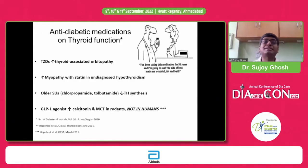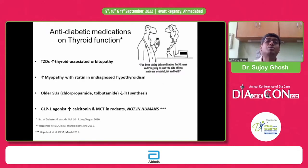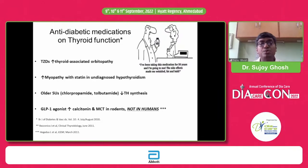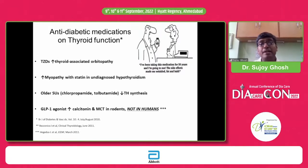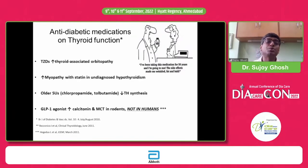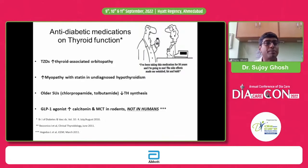Regarding the medications we use in diabetes and their effect on thyroid function: if you are using a glitazone in a patient with Graves' disease with thyroid-associated orbitopathy, there will be worsening — do not use glitazone in somebody with Graves' disease with suspected orbitopathy. If somebody is diabetic and you are prescribing a statin, first make sure the patient is euthyroid, otherwise there will be greater risk of myopathy. GLP-1 agents, though shown to have some concern in animal models, show no problems in humans.